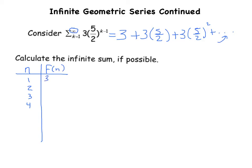Our function output values are 3 for the first one. I'm going to simplify: 3 times 5 halves is just 15 halves. That third term would be 75 fourths. And so I'm going to add a column here, as we've been doing before.